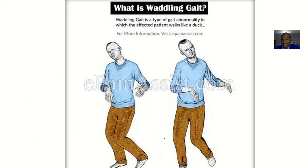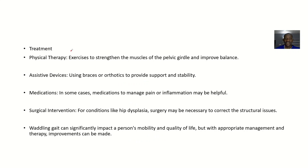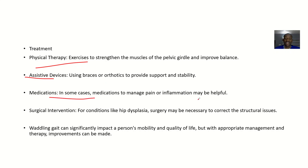Treatment for waddling gait includes physical therapy with exercises to strengthen the pelvic girdle muscles and improve balance. Assistive devices like braces or orthotics can provide support and stability. Medications may help manage pain or inflammation. For conditions like dysplasia, surgical intervention may be necessary to correct structural issues.